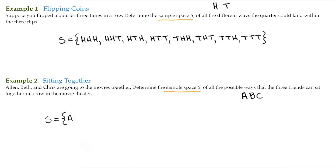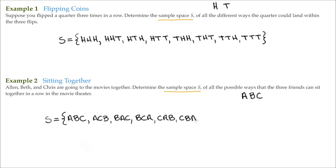We could have Alan, Beth, and then Chris. We could have Alan, Chris, and Beth. We could have Beth, Alan, and Chris. Beth, Chris, and Alan. And again, all we're doing is thinking of all the different ways that the three friends can sit together. Chris, Alan, and Beth. And I think the last one is Chris, Beth, and Alan.